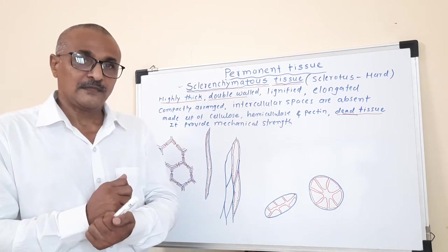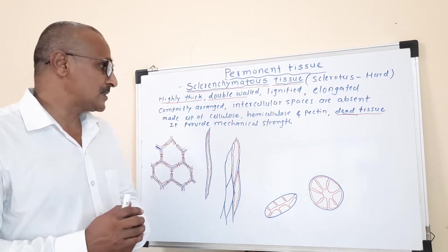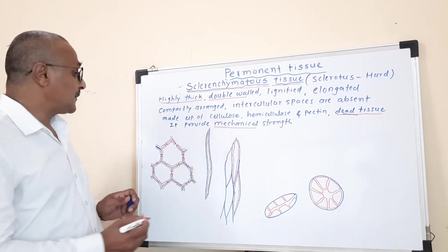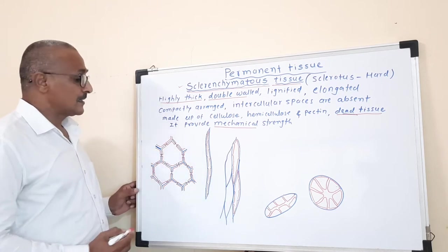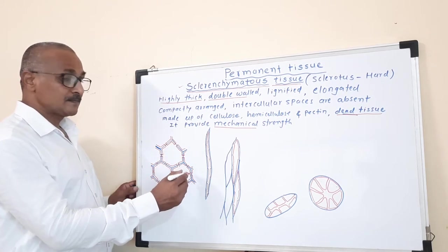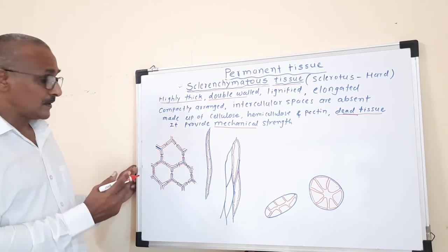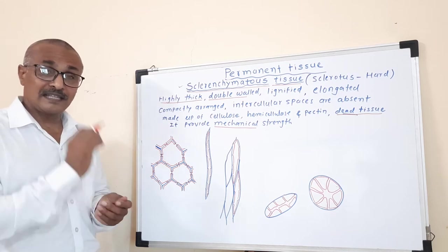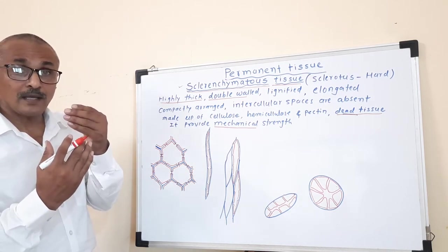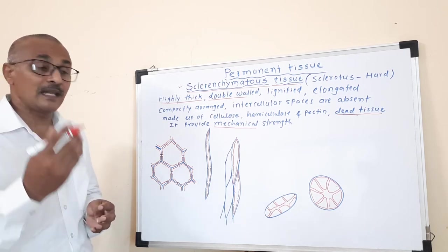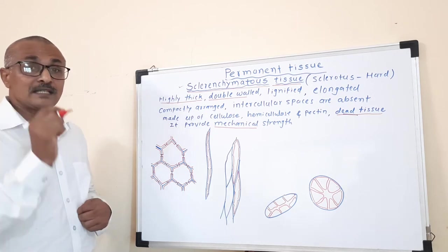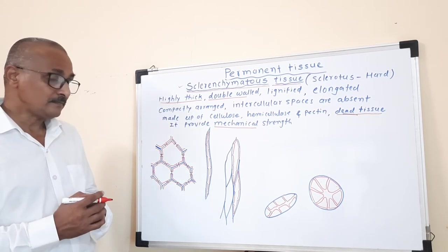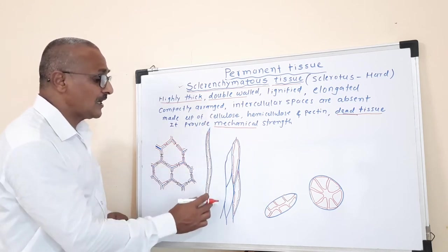It provides mechanical strength to the plant, hence it is called the mechanical tissue. The structure of sclerenchymatous cells shows a double wall — a highly thick, lignified double wall. On the cell wall there is a deposition of thickening by different types of pectin as well as lignin. Due to that, thickening is created and thin areas remain, because of the deposition. The cells are elongated, like fibers.